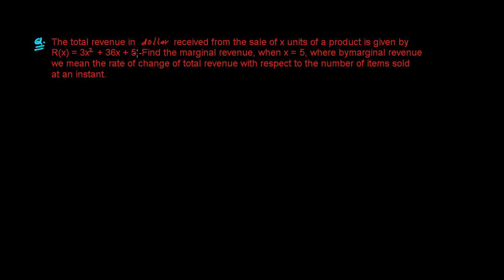The total revenue in dollar received from the sale of X units of a product is given by R. This relationship gives the total amount of the revenue we generated, total amount of money we made by selling X amount of product. Then find the marginal revenue when X equals to 5.